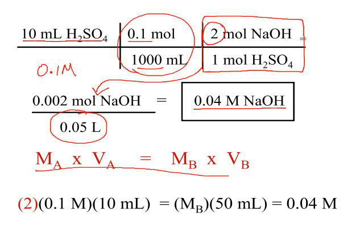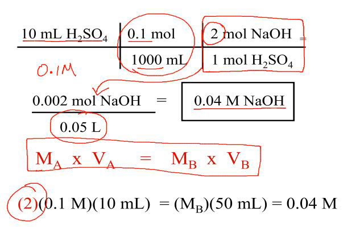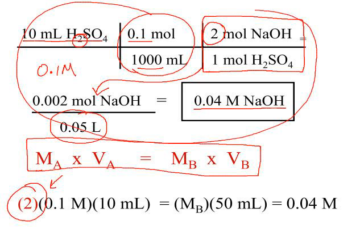If you use the MA×VA = MB×VB equation, it's certainly possible, but you need to pay attention and put the factor of 2 in here to account for the 2 hydrogen ions coming from the sulfuric acid. If you put the 2 on the wrong side, that's when you'll make the most common mistake. So use this method if you feel comfortable and are sure you can place that coefficient in the correct spot, or use dimensional analysis, which will never fail you.